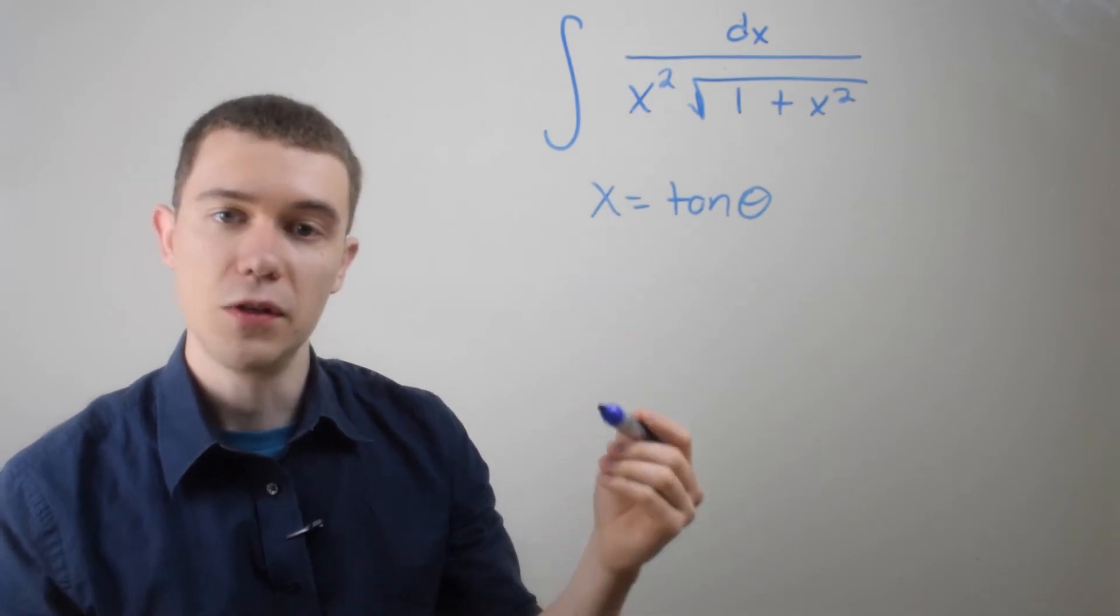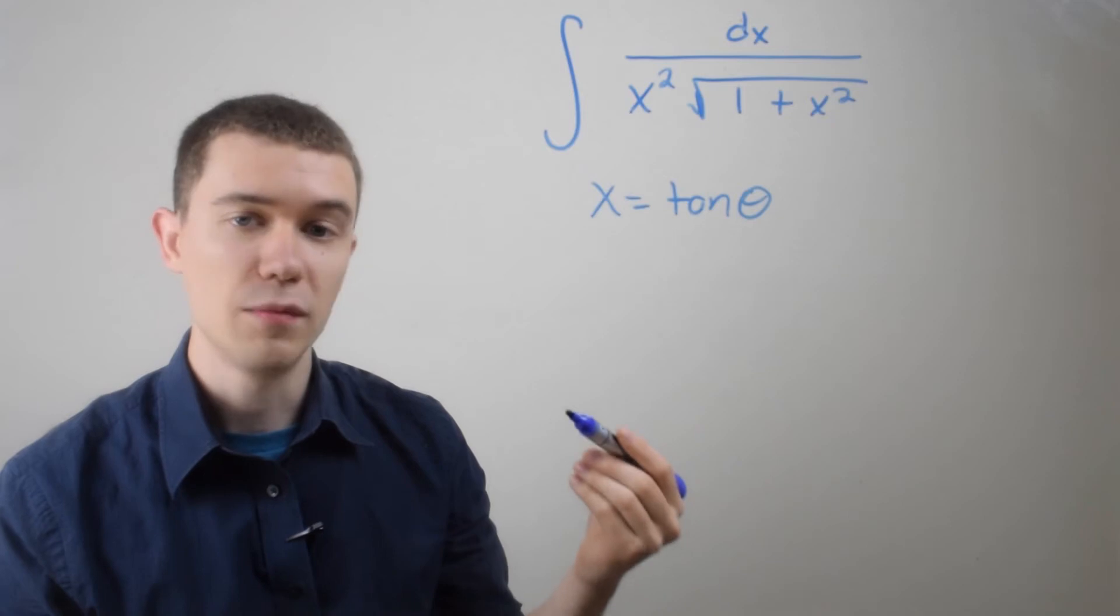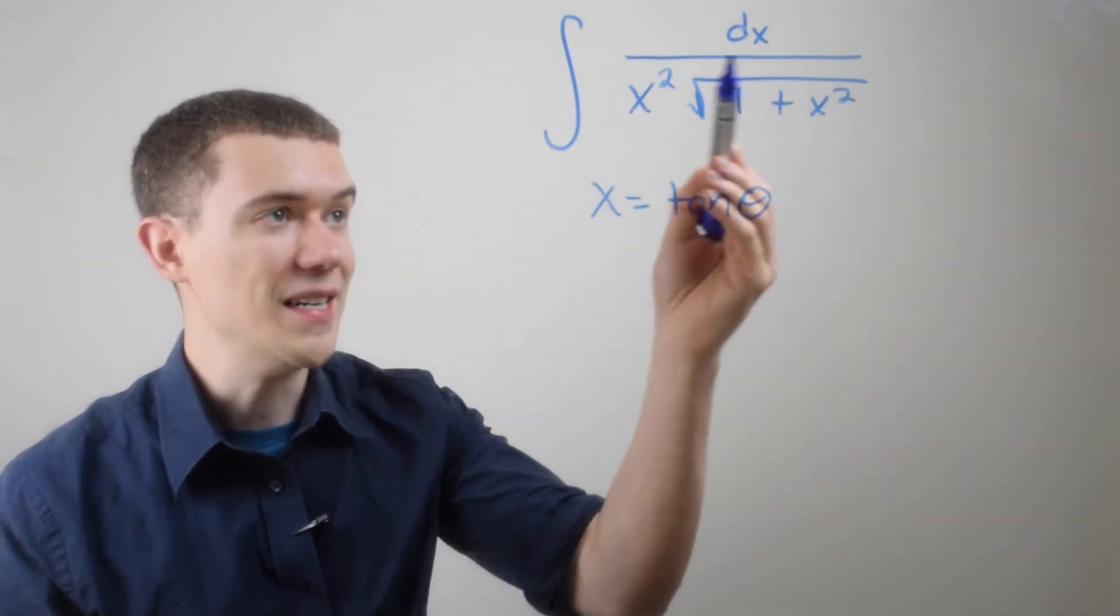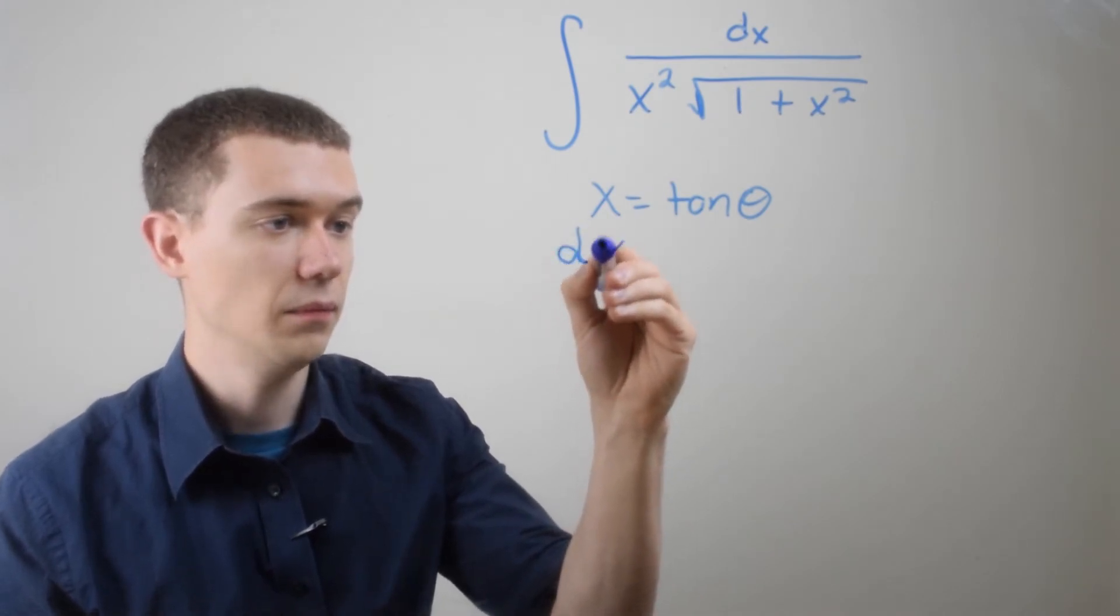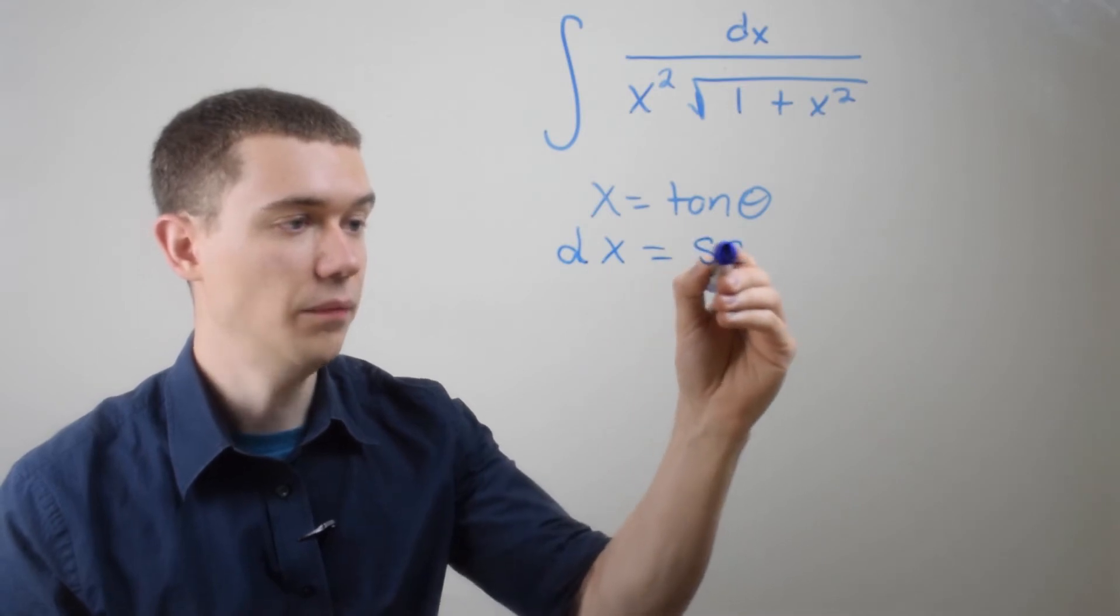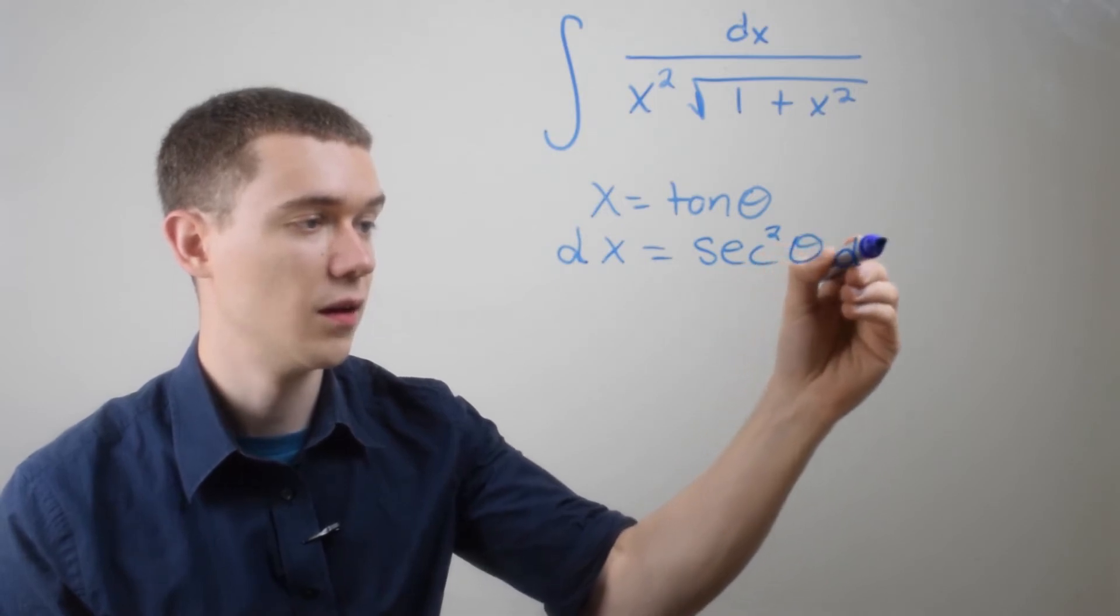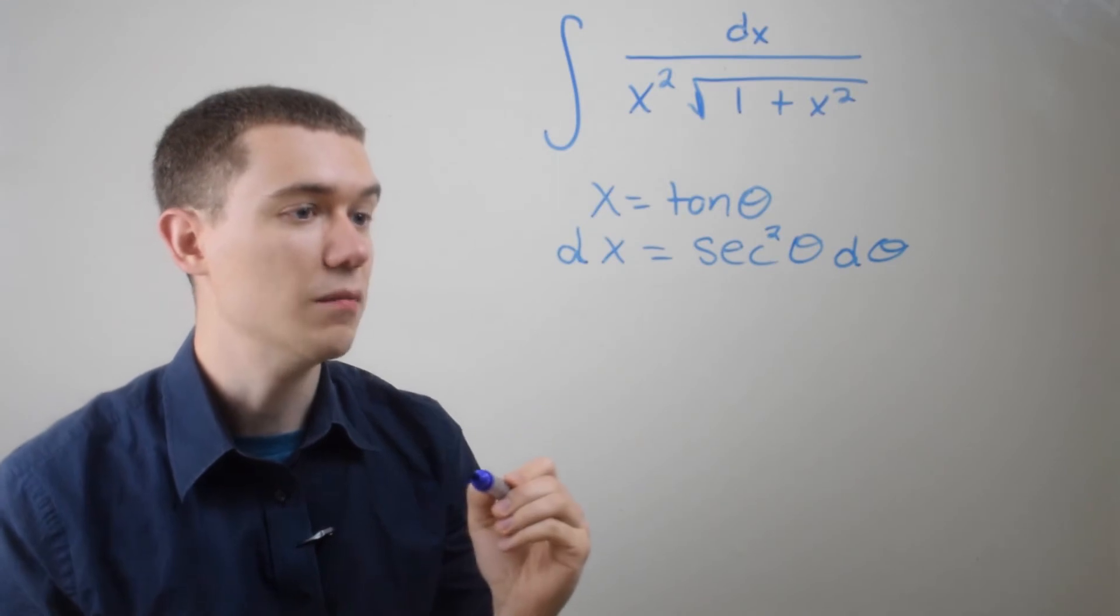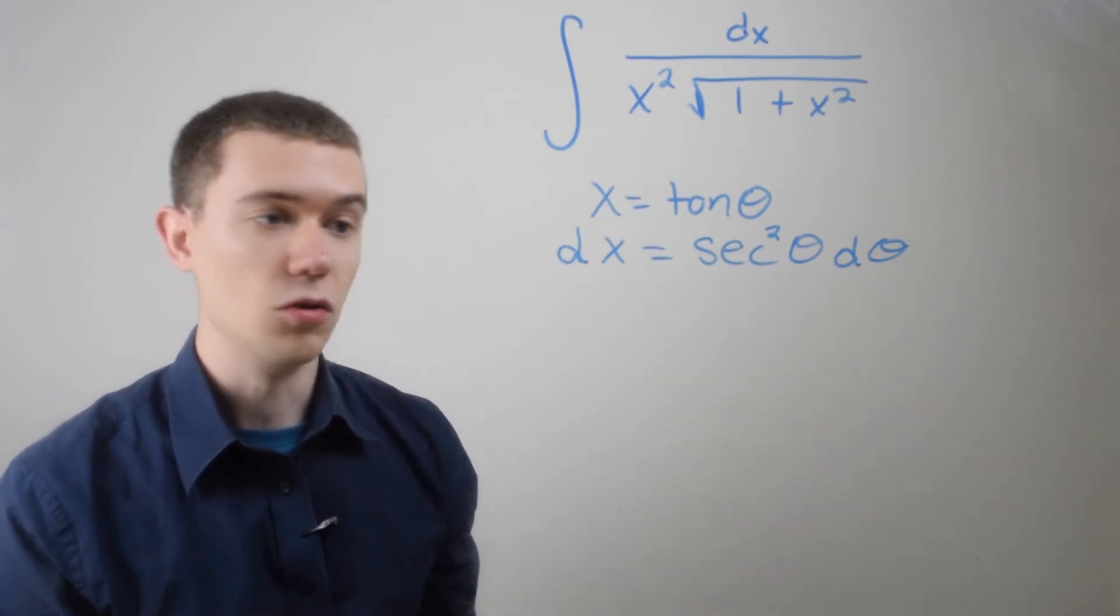So whenever you're doing these substitutions with integrals, right, I need to change the variable. So in this case, I'm changing the variable to theta, which means I'm going to have to deal with this dx. I'm going to have to make sure I get a d theta in here. So by taking the derivative of both sides, the derivative of tangent is secant squared. And I'll stick on that d theta. So I've got what x is supposed to be, I've got what dx is supposed to be. Let's make these substitutions.